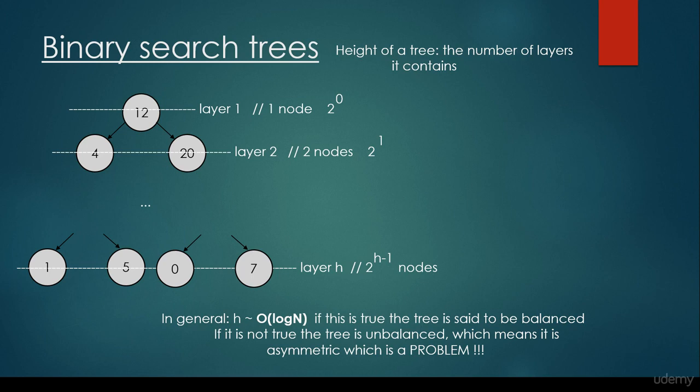What about the height of the tree? Basically, the height of the tree is the number of layers it contains. Layer 1 contains a single node, so it has 2^0 nodes. Layer 2 contains 2 nodes, so 2^1 nodes. Layer h — where h is the height of the tree — is going to contain 2^(h-1) nodes. In general, h is going to be proportional to O(log n). If this is true, then the tree is said to be balanced. If this is not true, then the tree is unbalanced, which means that it is asymmetric, which is a problem — because the running times are going to be reduced and the logarithmic time complexity is not going to be met if the tree becomes unbalanced.